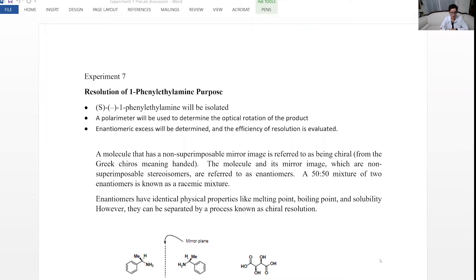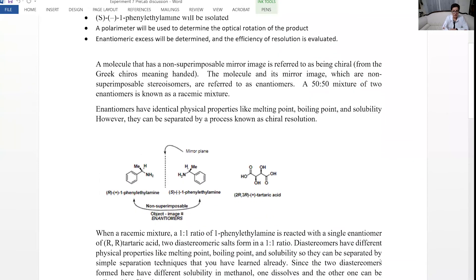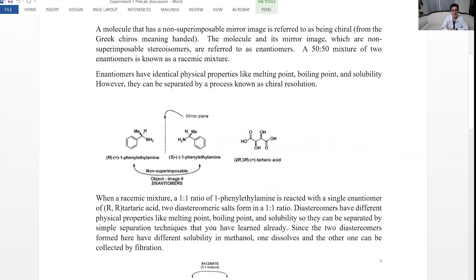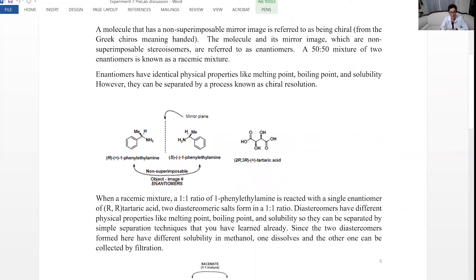What is going to happen, or what are the steps? First, because enantiomers have similar physical properties and we cannot separate them, we are going to change them to something new by making them react with pure tartaric acid, pure enantiomer of tartaric acid, which is 2R3R plus tartaric acid.